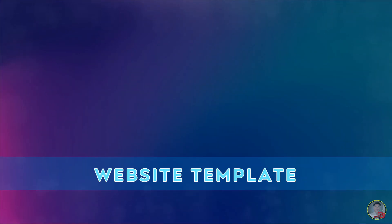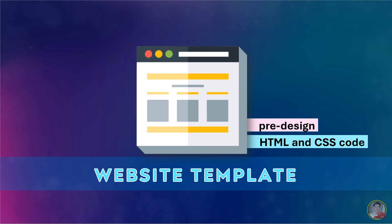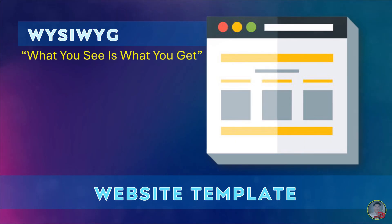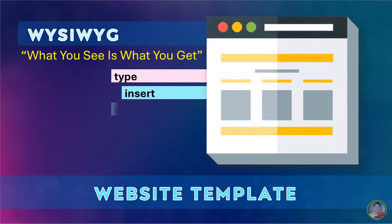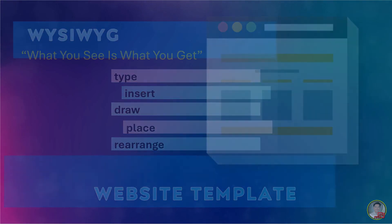Website template. A website template is a pre-designed webpage — simply add your text and customization to create your desired webpage. It is usually built with HTML and CSS code. We can use a WYSIWYG editor that allows us to create and design a webpage without any coding knowledge. The acronym WYSIWYG stands for 'what you see is what you get,' meaning whatever you type, insert, draw, place, and rearrange on a page is exactly what the audience will see.